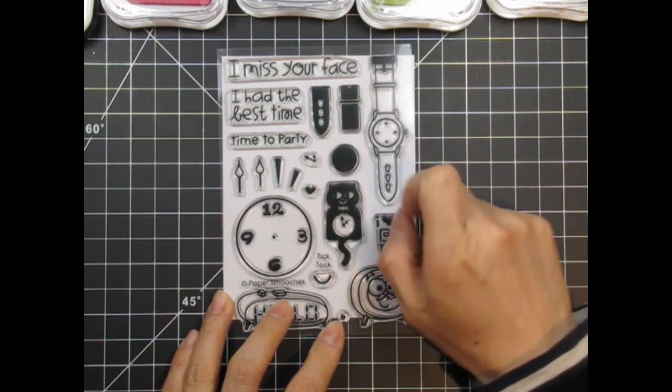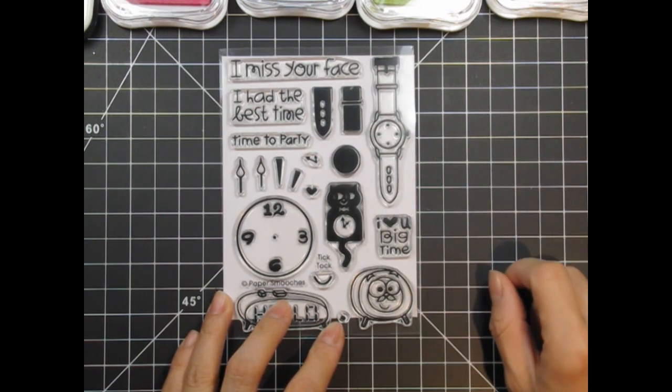My favorite is the wristwatch, which includes solid stamps for the band, as well as a clock face. Adorable little arms are also included.